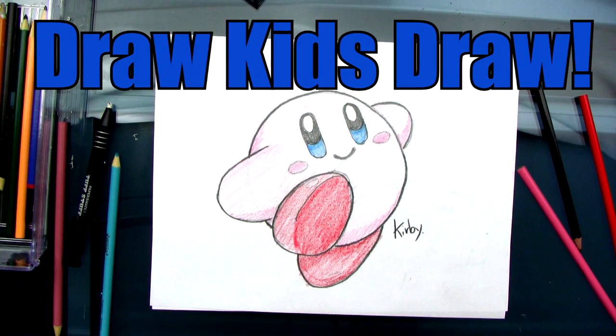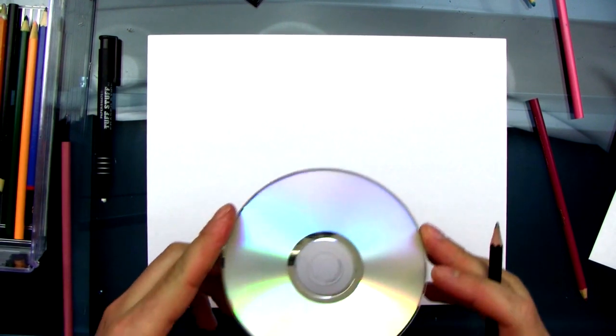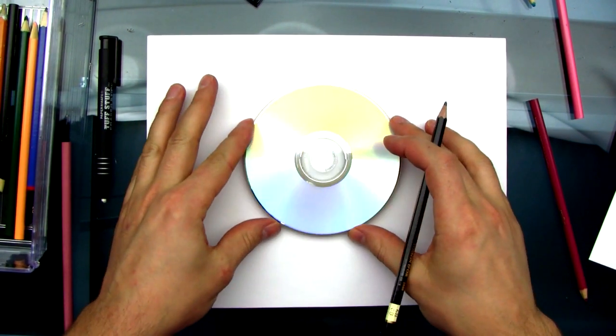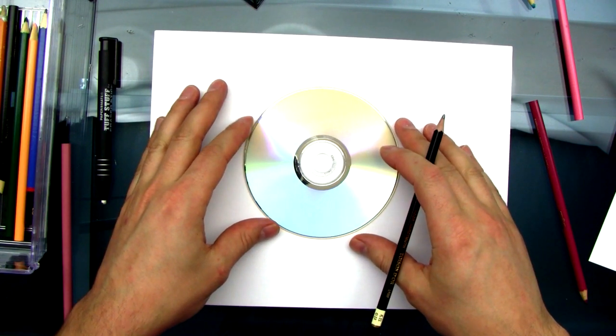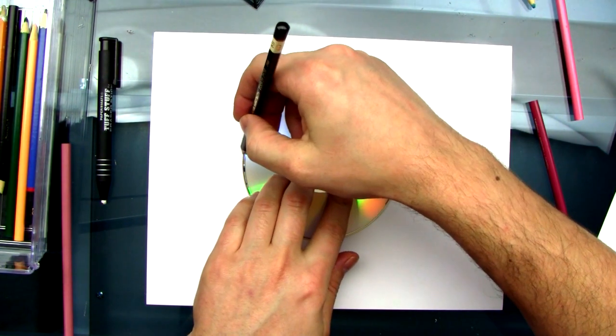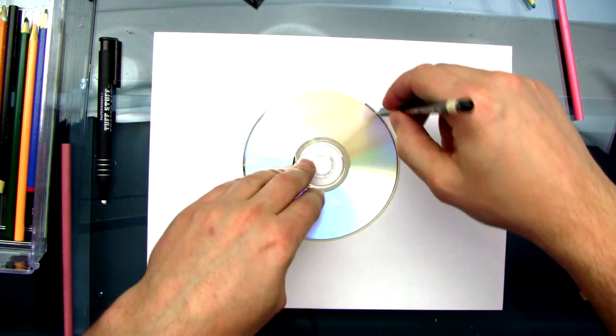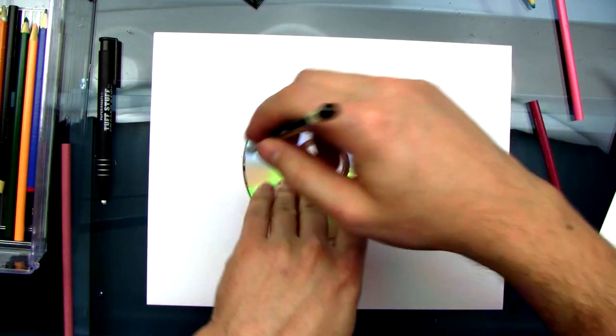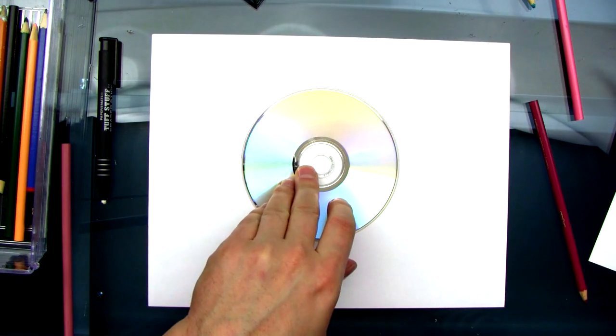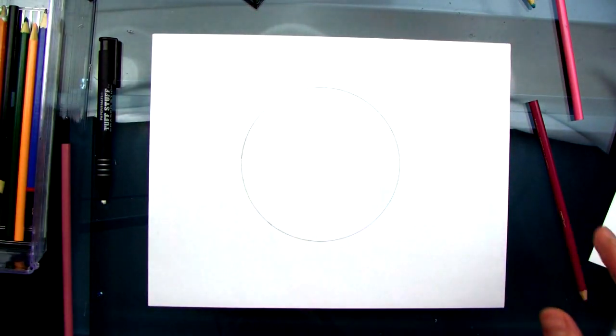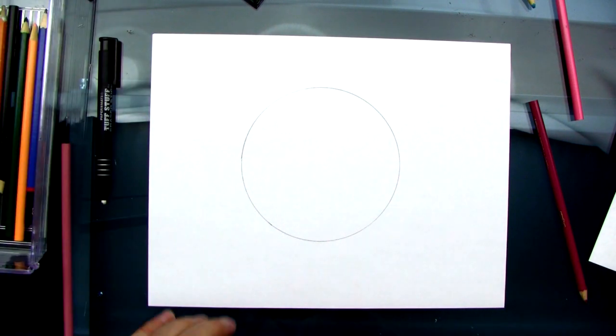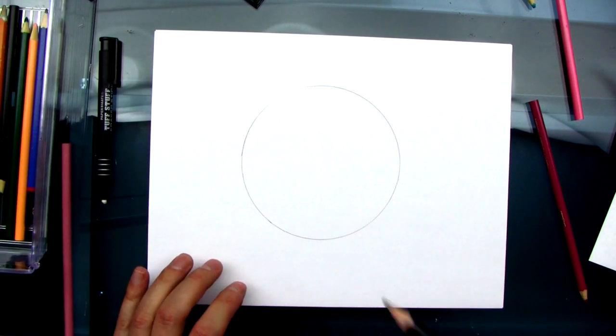Hey, welcome to Draw Kids Draw, and today I'm going to show you how to draw Kirby, you know, Nintendo's Kirby, the little round guy. I'm going to use a CD because he's so perfectly round, this is the easiest way to do it. So we trace around the CD, and now we have a perfect circle, perfect. Step one complete.